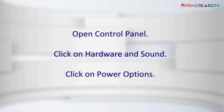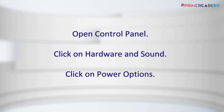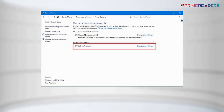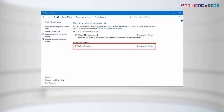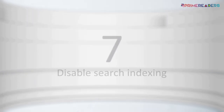Open Control Panel, click on Hardware and Sound, click on Power Options, then select the High Performance Power Plan.